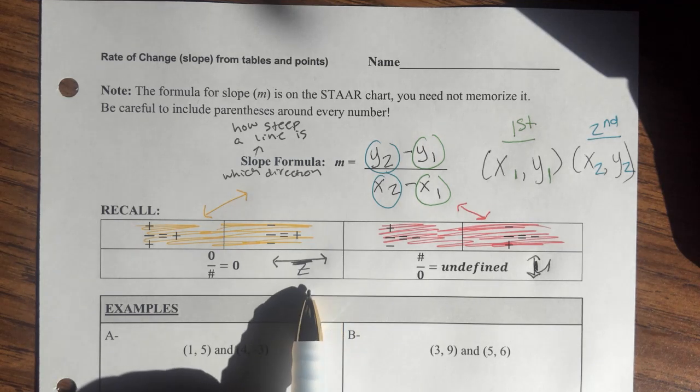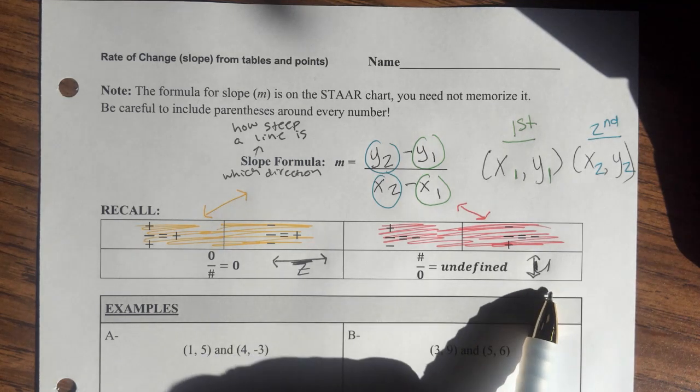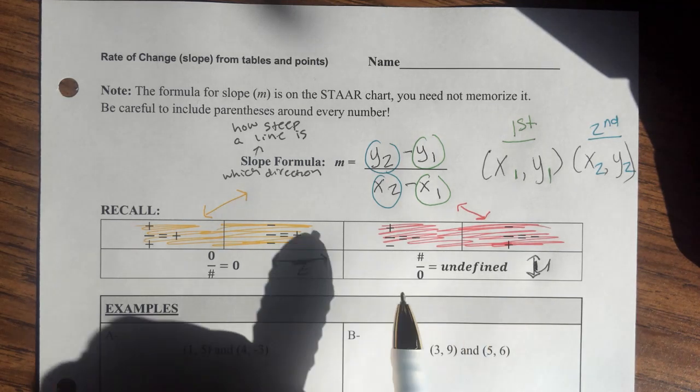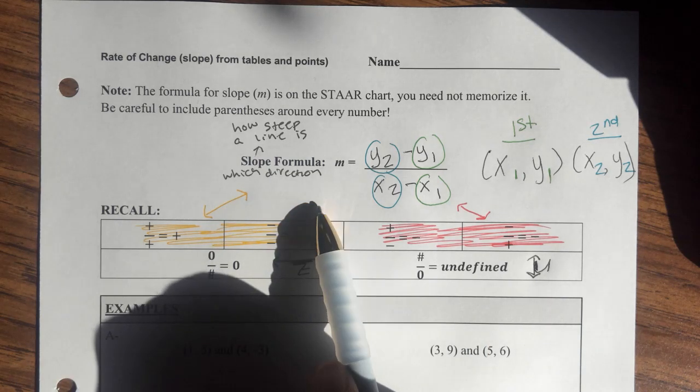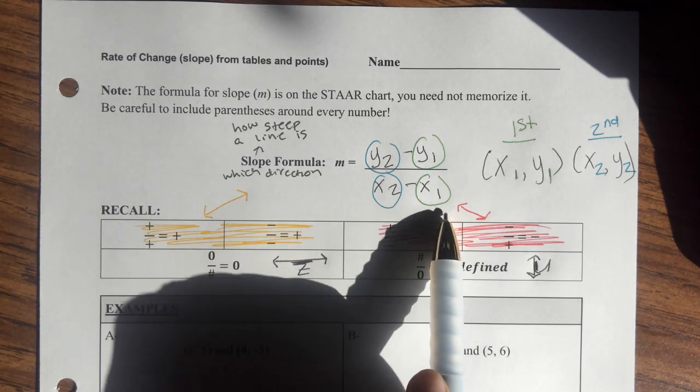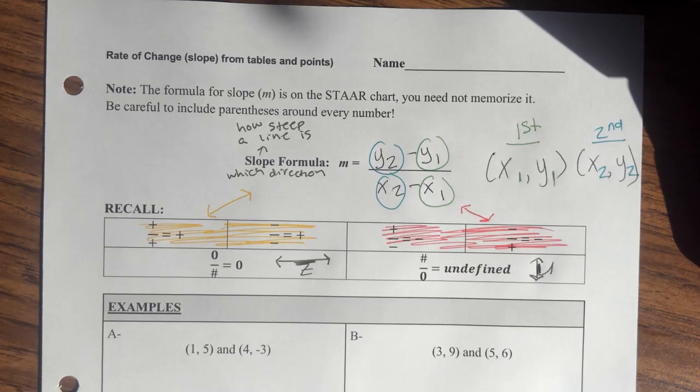So if I can make a z out of the line, it's a zero slope. If I can make a u out of the line, it's undefined. And then obviously if it's going up towards the right, it's positive. And if it's going down towards the right, it's negative.